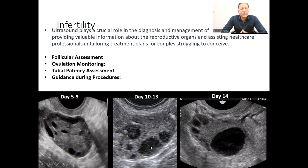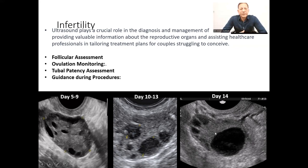The dominant follicle continues to grow, and by the 28th day of the cycle, it should reach a minimum of 16 millimeters or more. That is called the matured follicle. Through serial ultrasound studies, healthcare professionals observe whether the development of these follicles is occurring. If they are developing well, by the 14th day of the cycle, the matured follicle is seen.